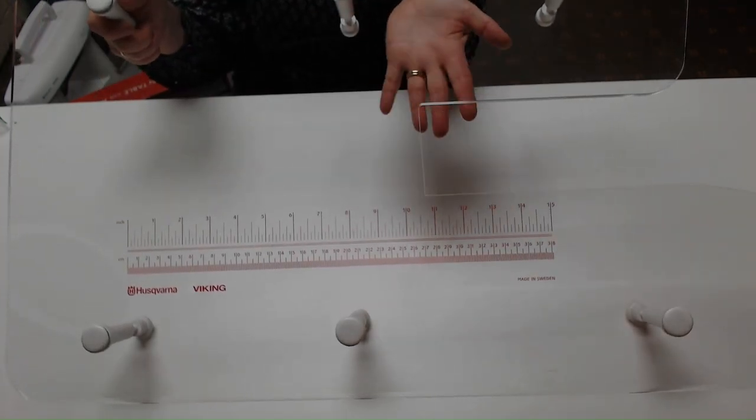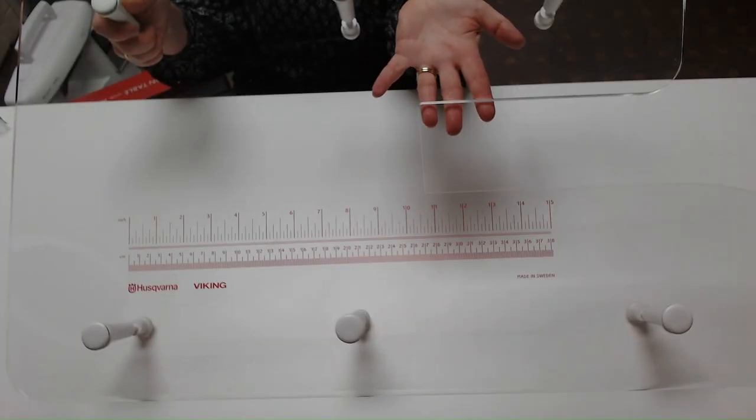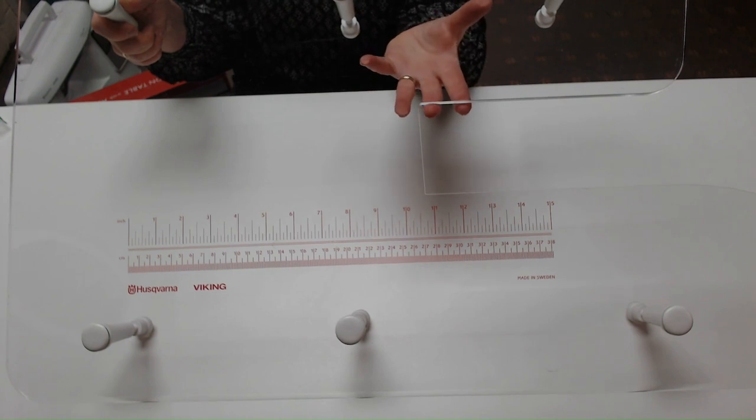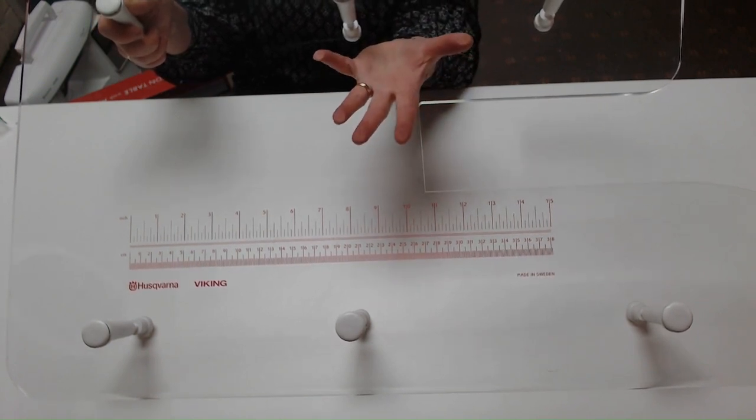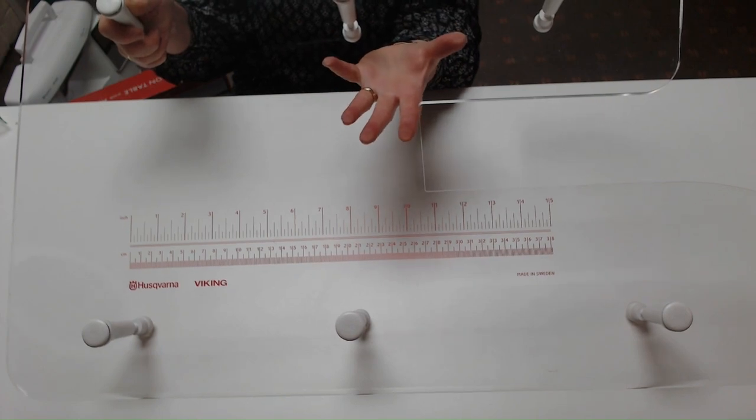This table is clear, so as you can see, I can put my hand under it—it's completely clear. This table is great for using as a light box as well as a table, so you can put a light underneath it and trace off your patterns on top.